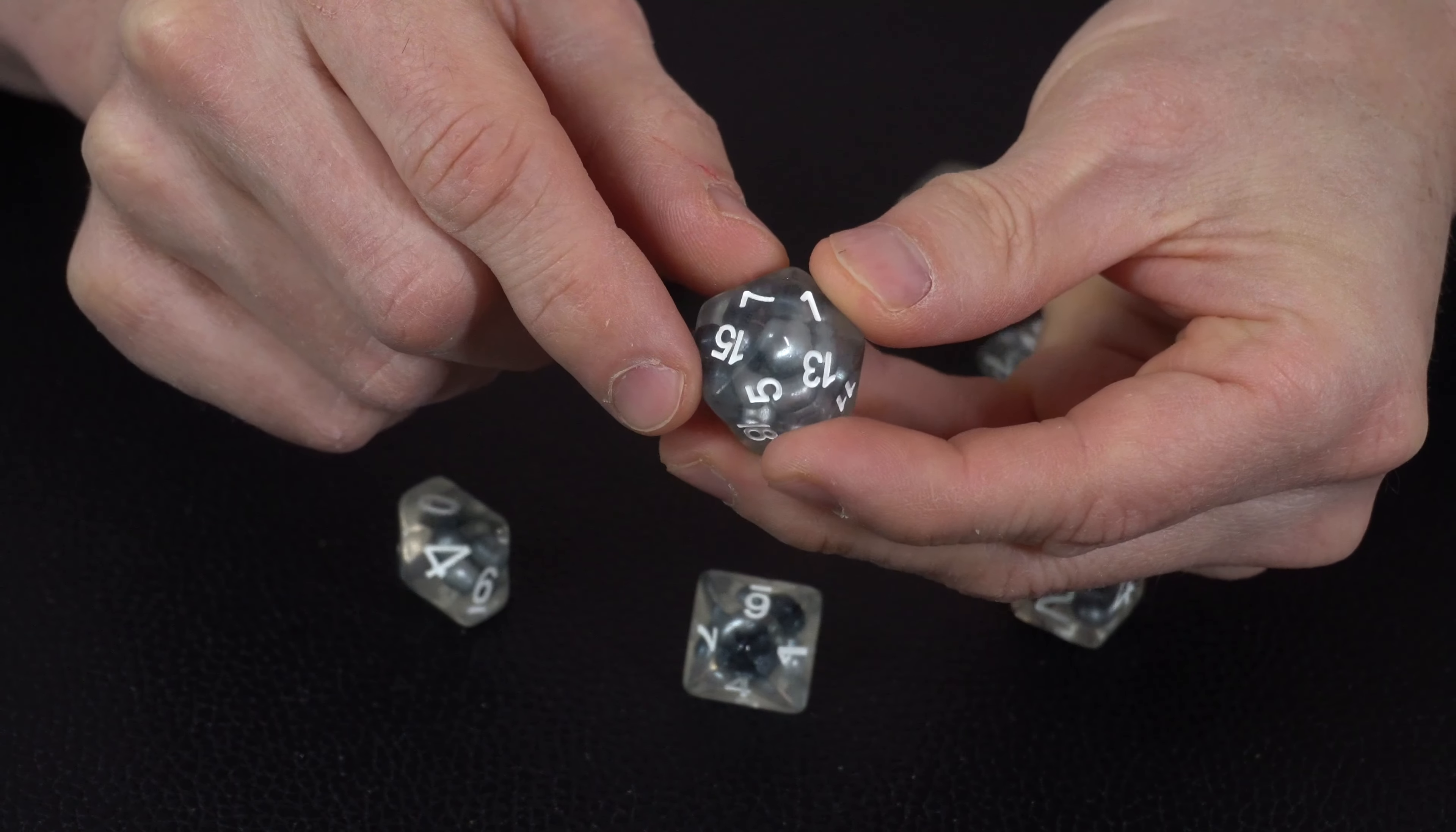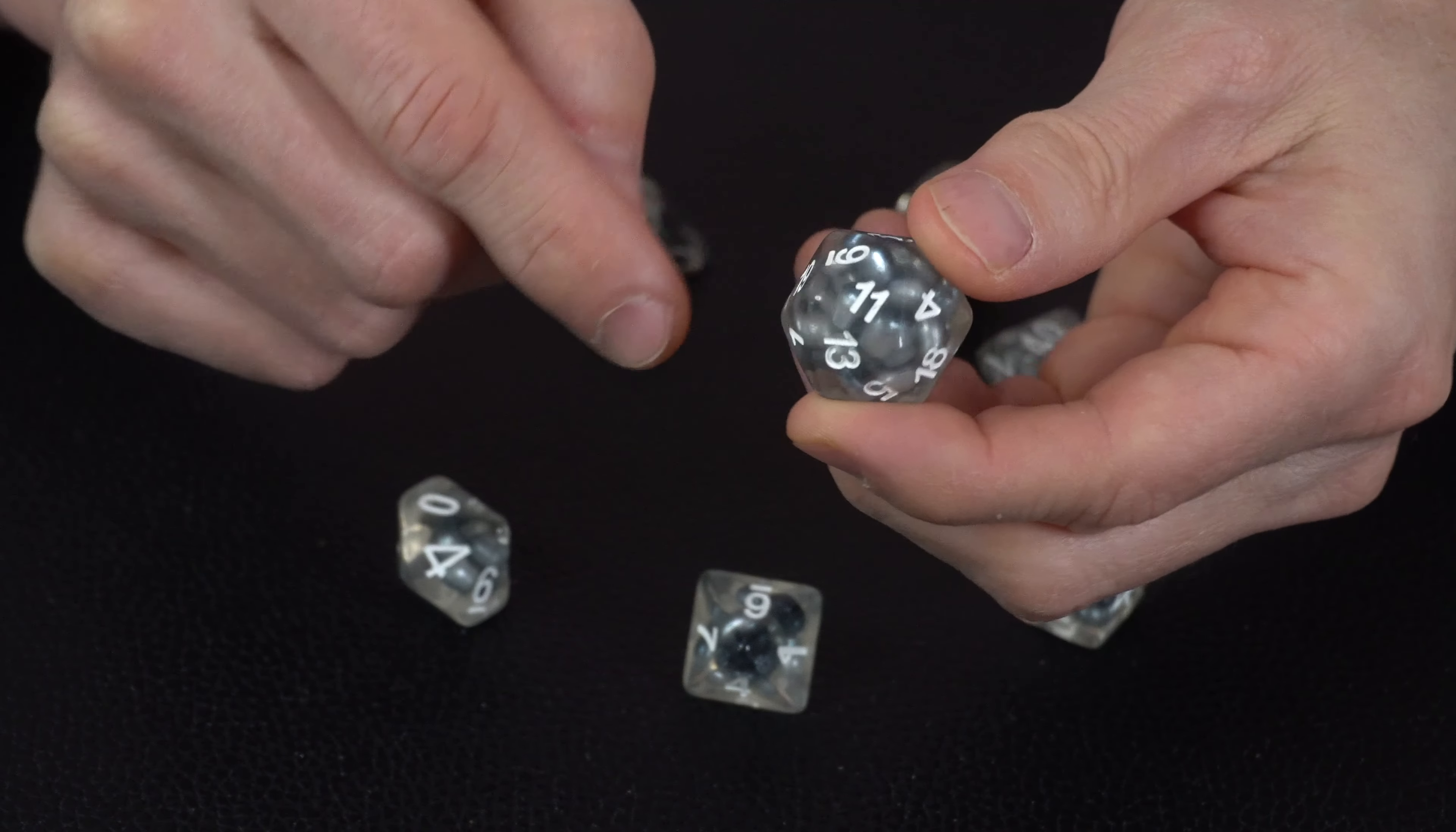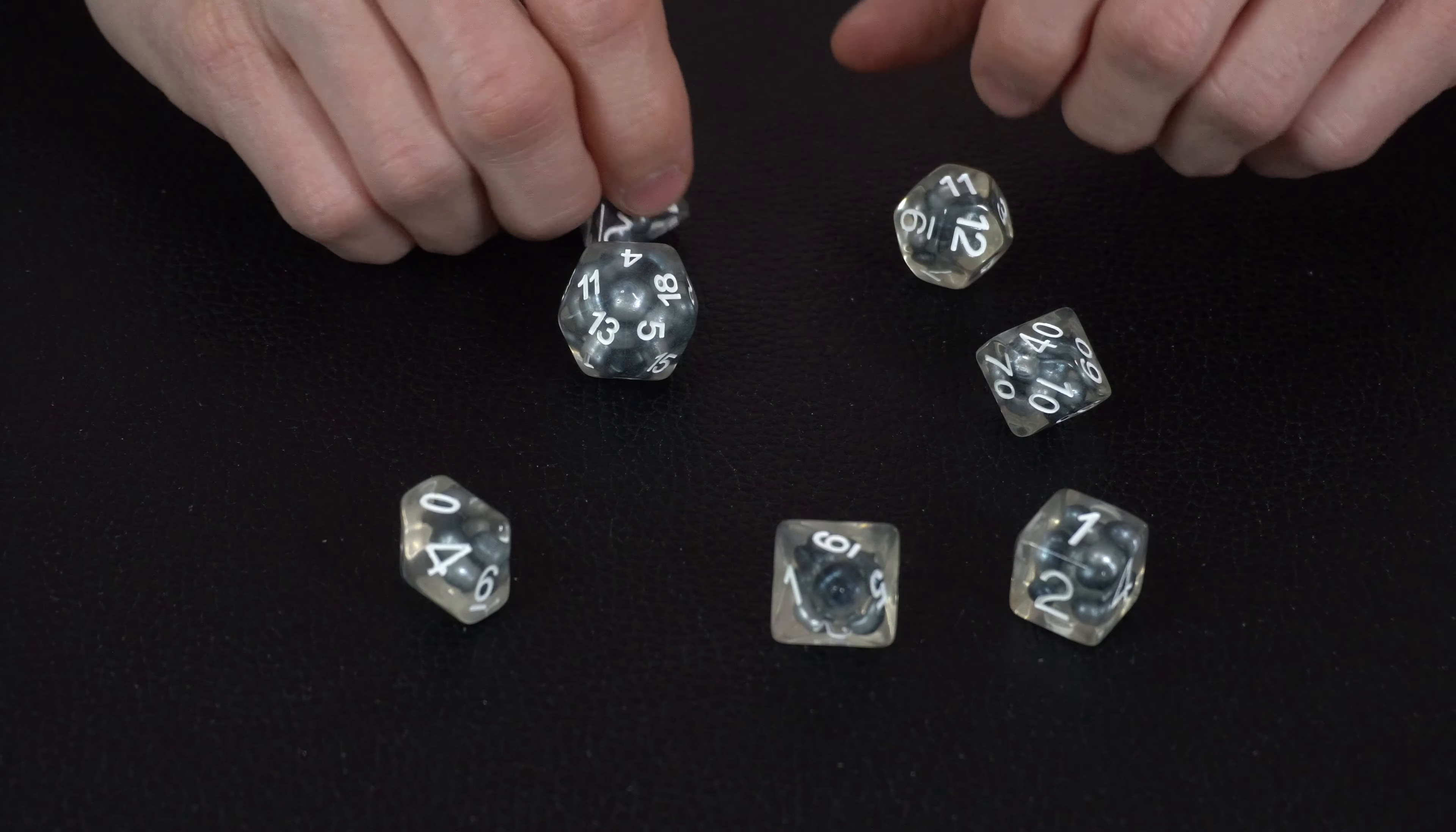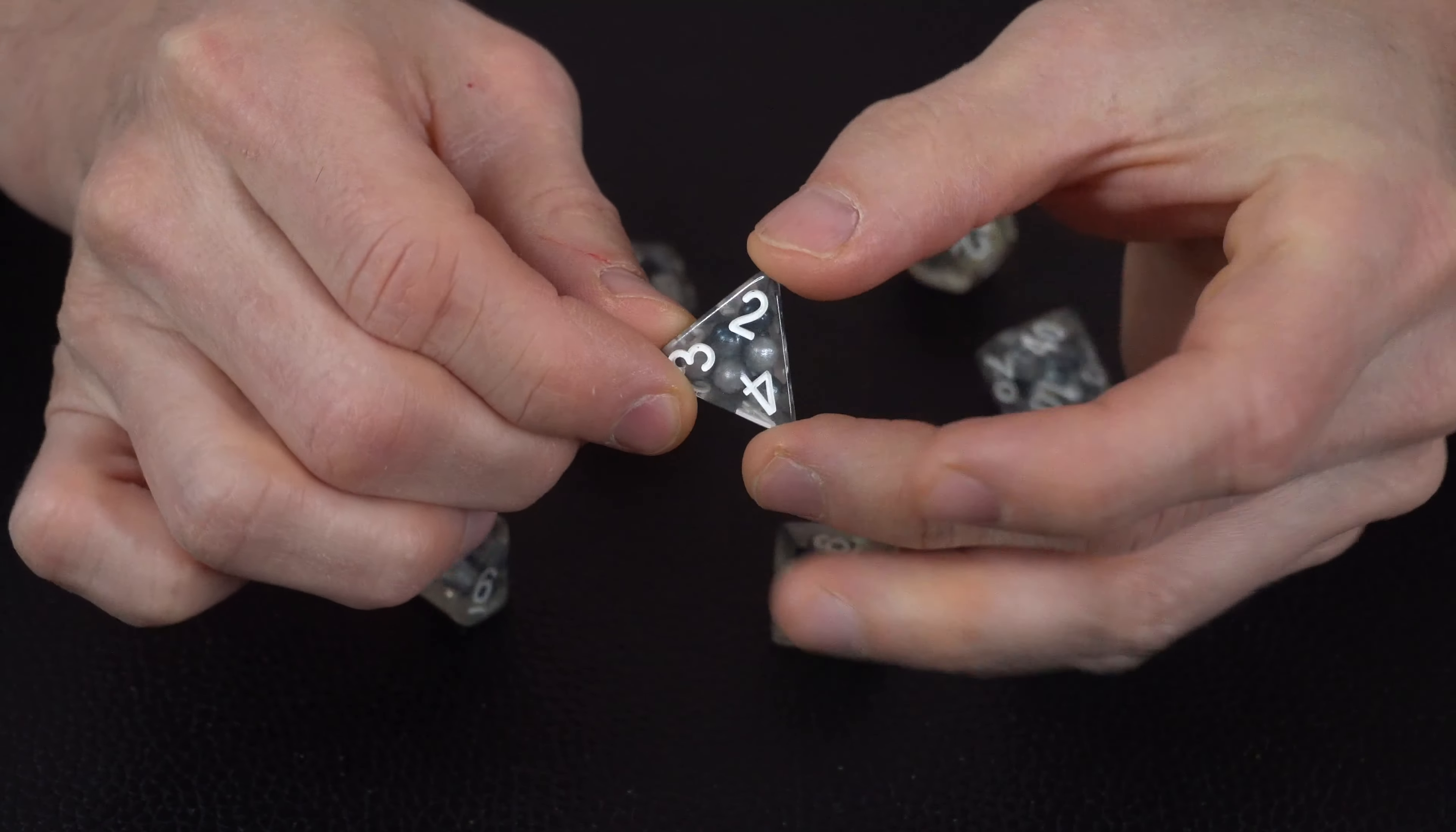What is interesting is as you look at all the different ones, whether it's the dodecahedron or the triangle, you get a little bit of magnification in the corner as you start to roll it around. All the spheres are suspended differently within each dice piece. It's interesting to see how they settle in there as it comes together.